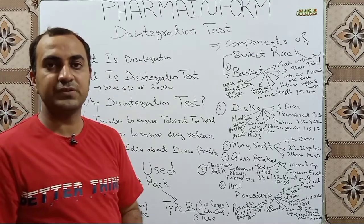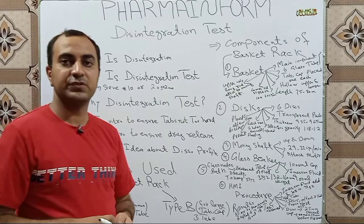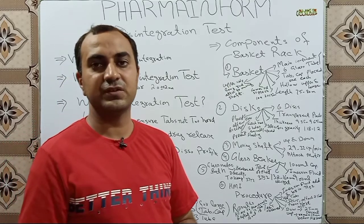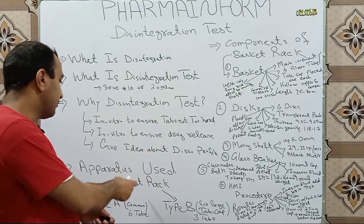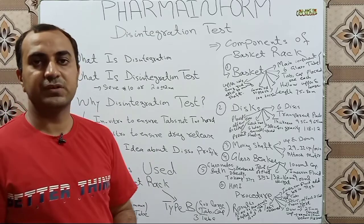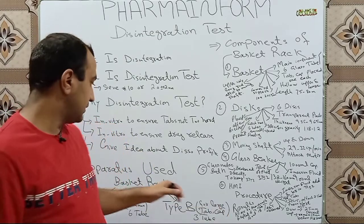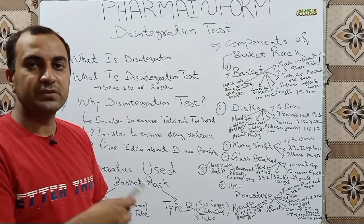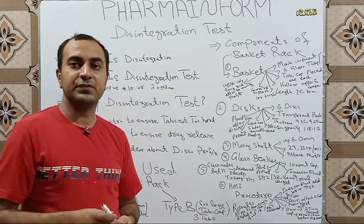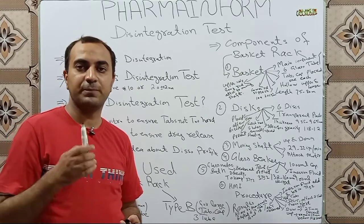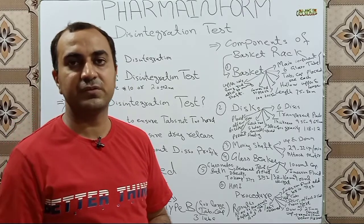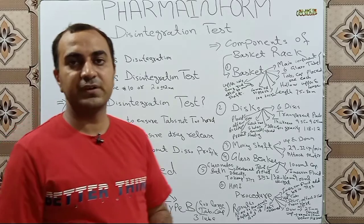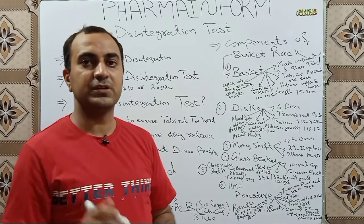What is the apparatus used for the disintegration test? This is a commonly asked question in tests and interviews. The name of the apparatus is the basket rack assembly. It has two types: Type A and Type B. Type A is the most commonly used apparatus in pharmaceutical industries and has six glass tubes. Type B is used for large-size tablets and capsules and has three glass tubes.